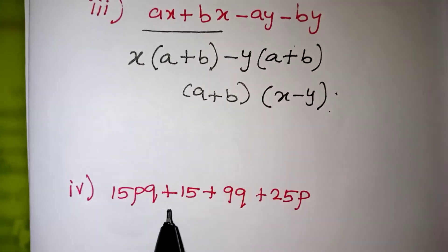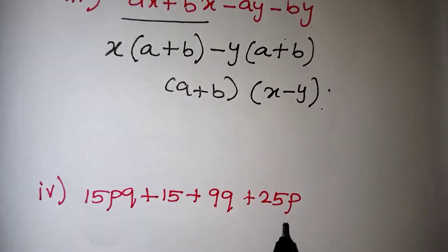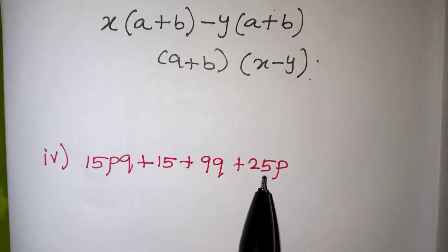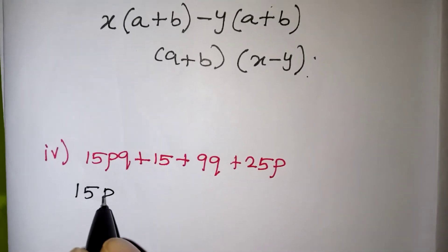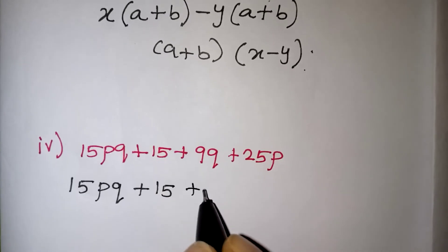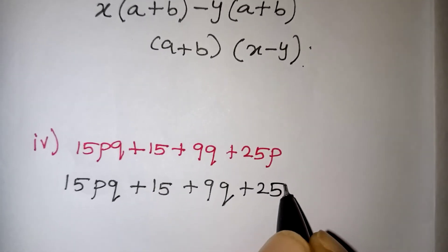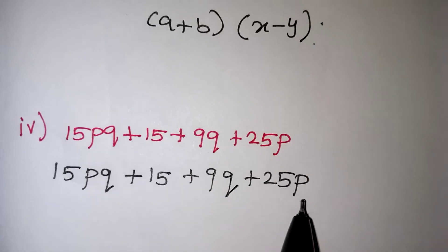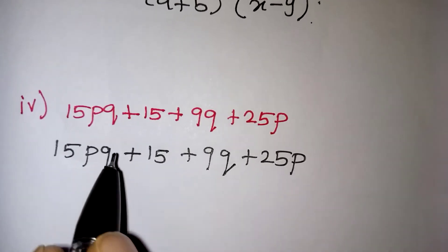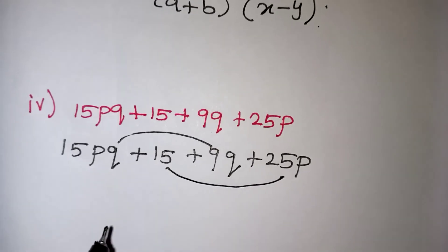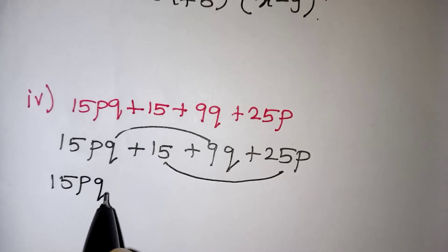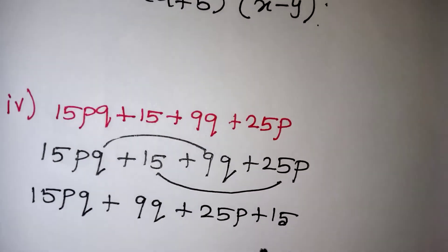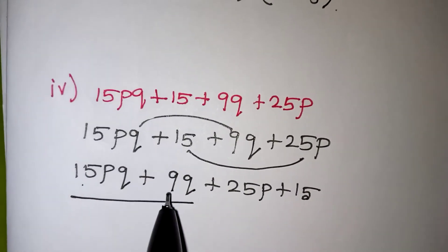Now the fourth problem: 15pq + 15 + 9q + 25p. If we group as written, taking 15 outside the first two terms gives (pq + 1), but the remaining terms don't match. So we need to rearrange: write it as 15pq + 9q + 25p + 15, then group the first two and last two terms.